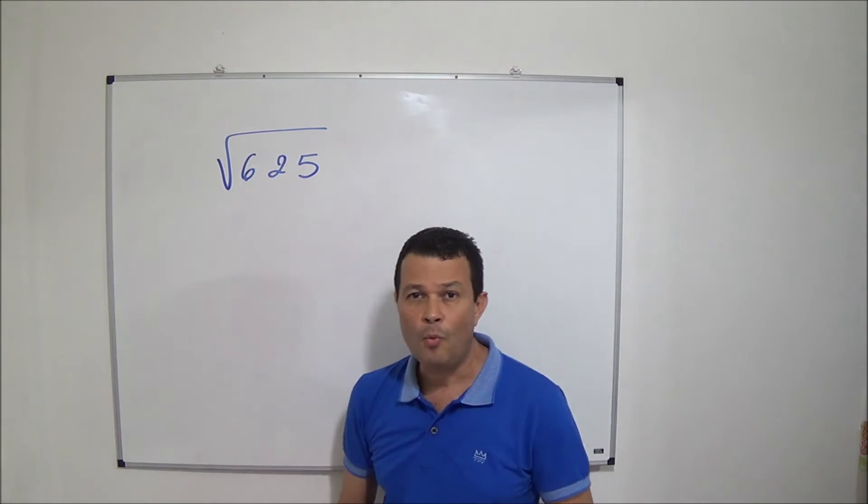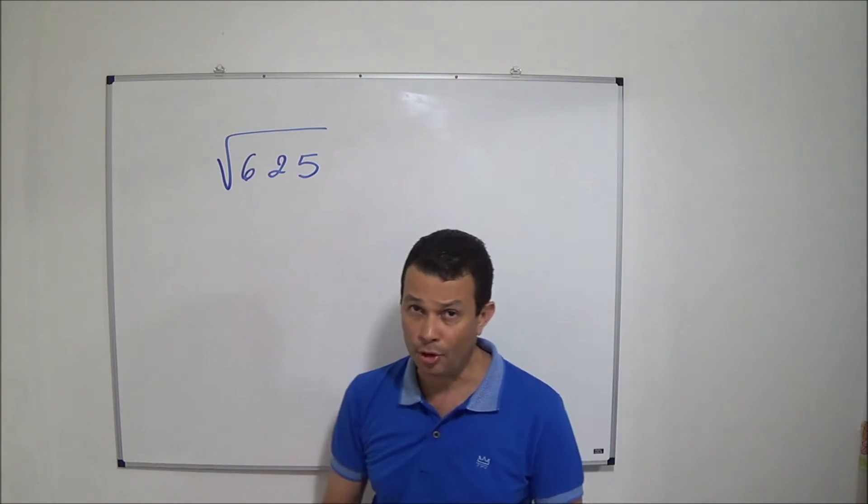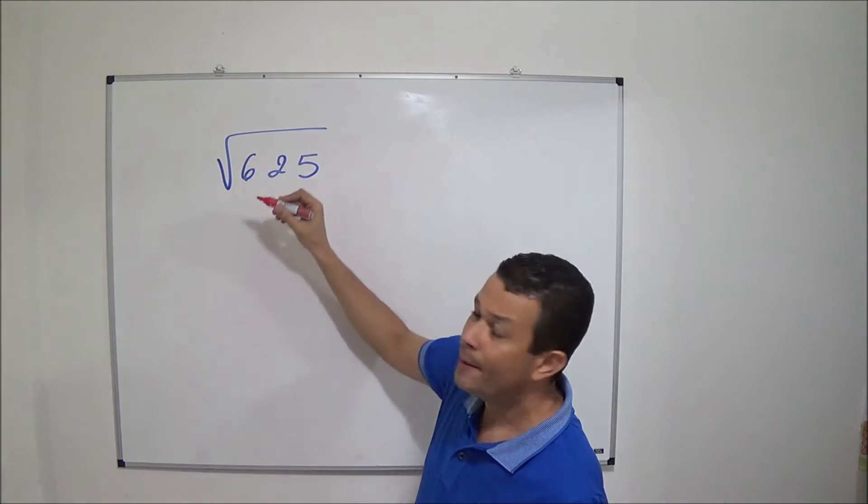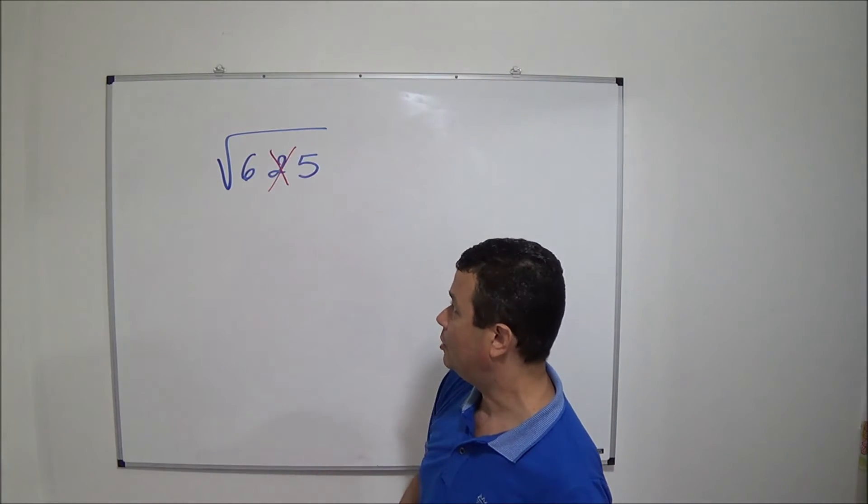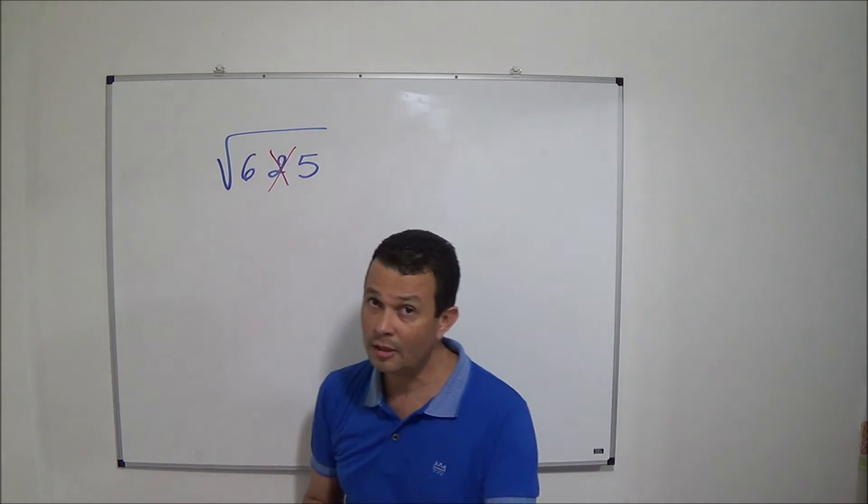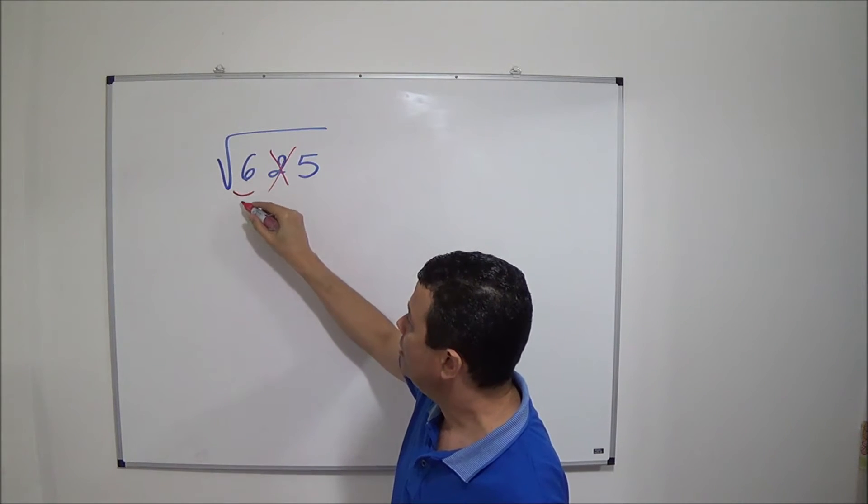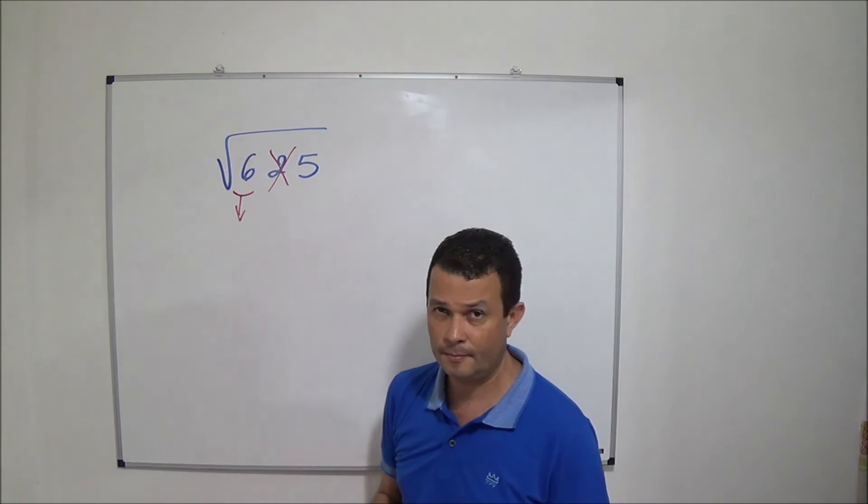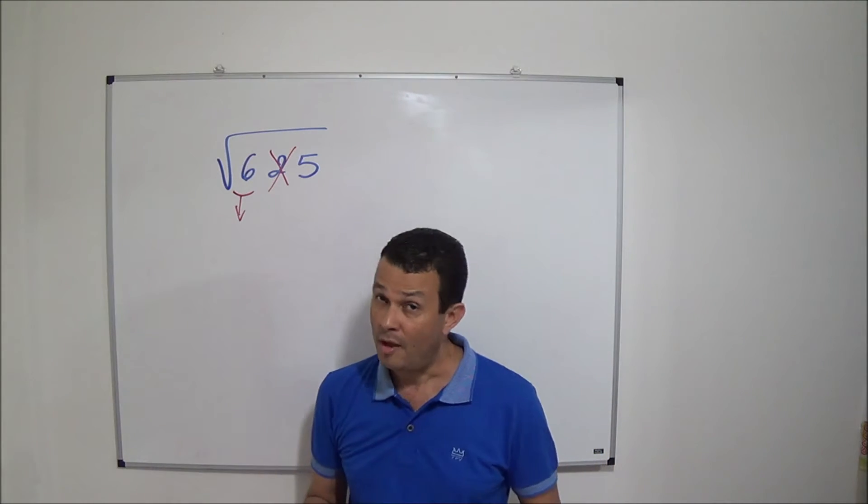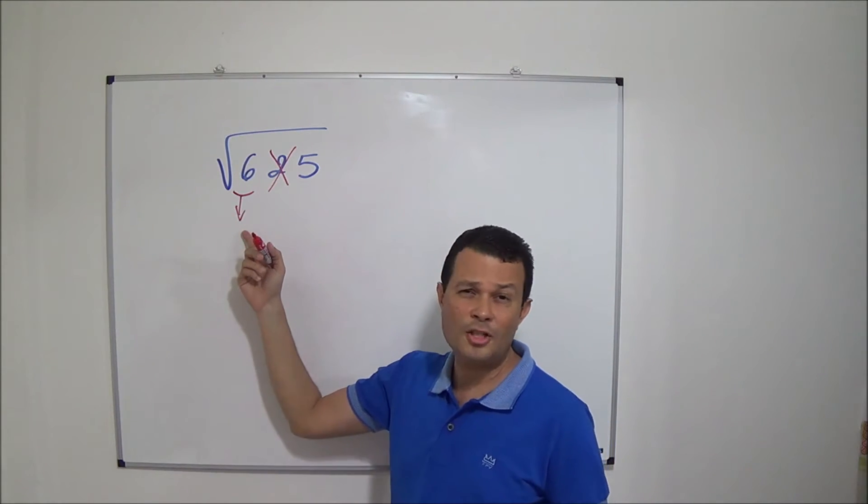The first example is square root of 625. Firstly, we have to forget temporarily the penultimate algorithm of the number. Secondly, we have to calculate exact square root of 6. However, 6 is not a perfect square.